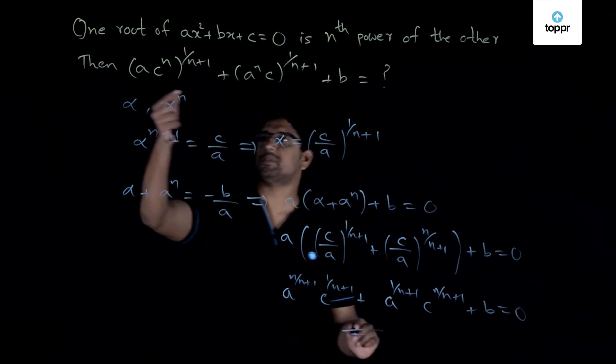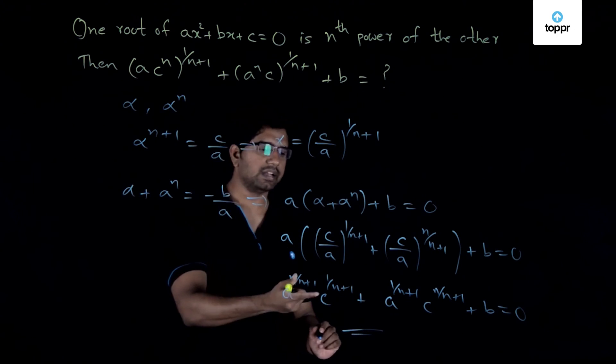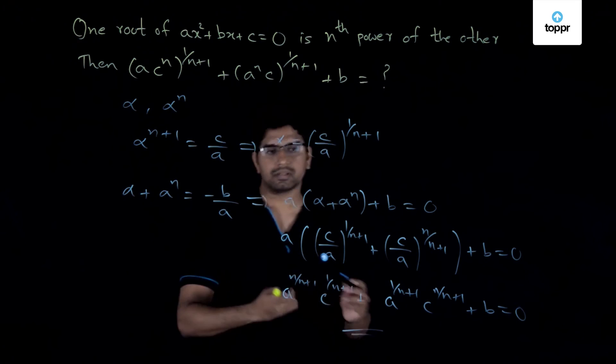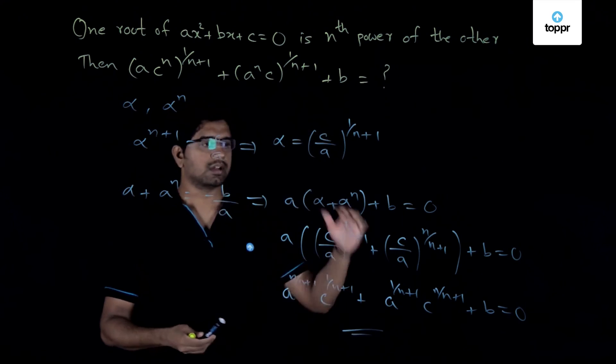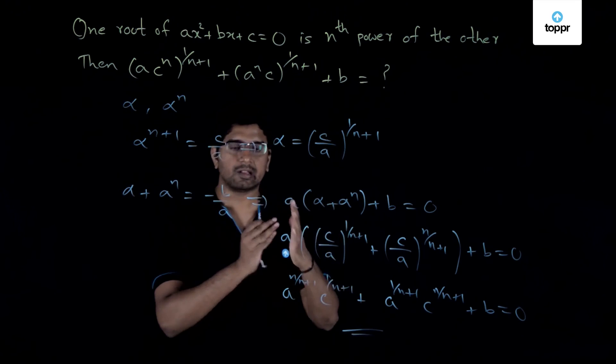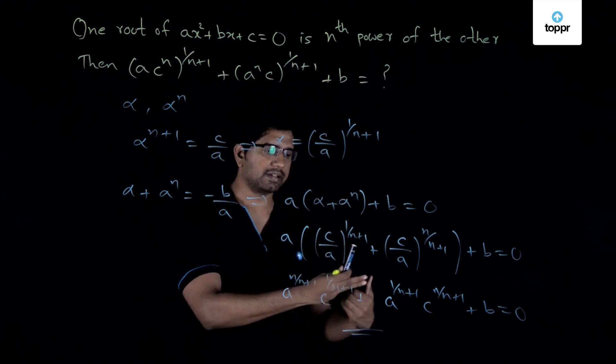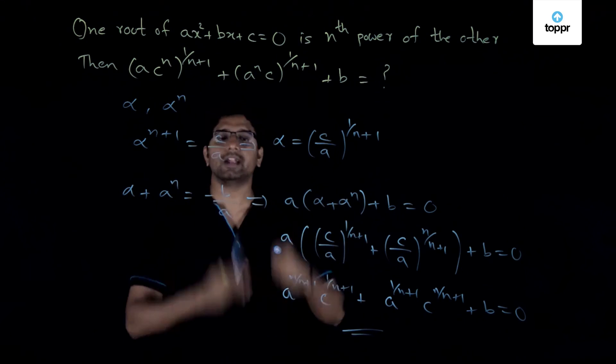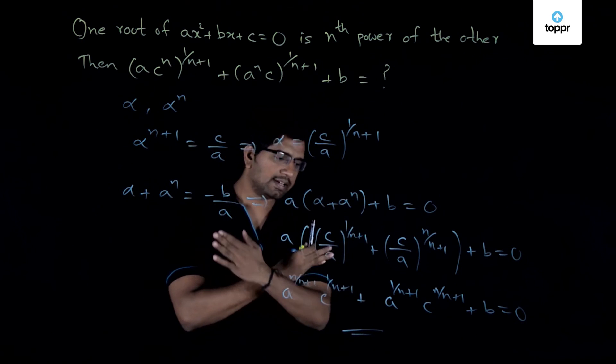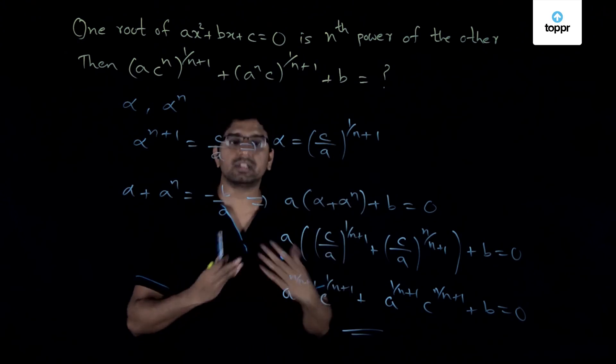Yes definitely it is therefore the answer is equal to 0. So this was a good problem because it looked as if it is a complicated thing but the thing is if you just write down the sum of the roots and the product of the roots equation then the answer follows immediately.